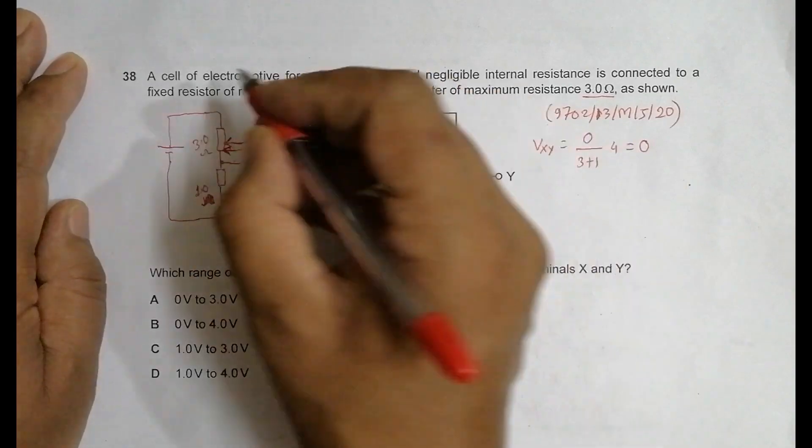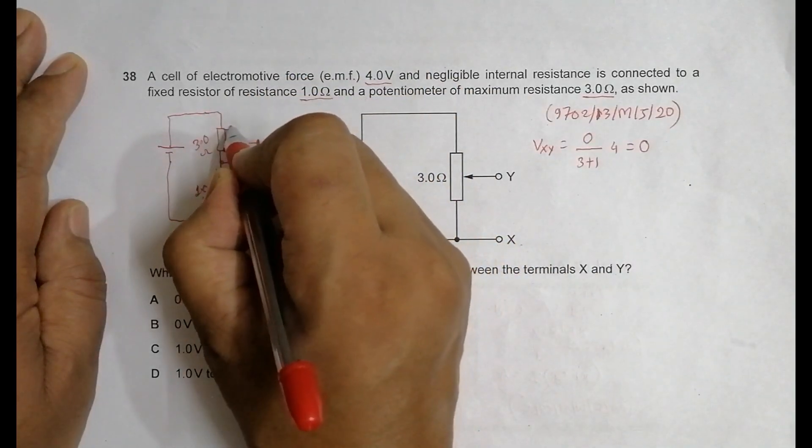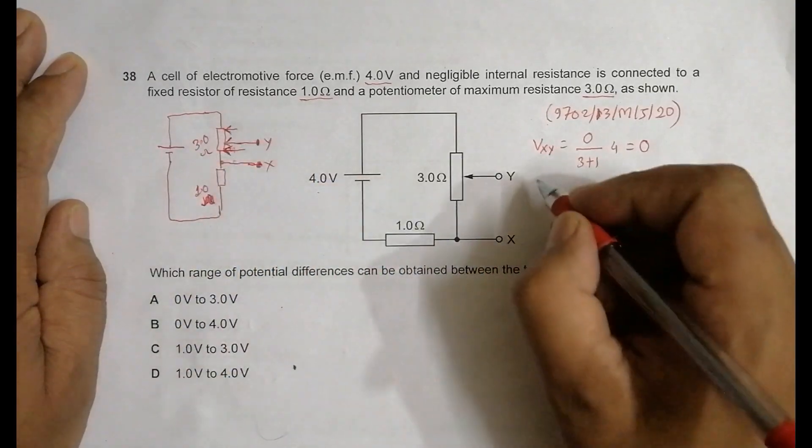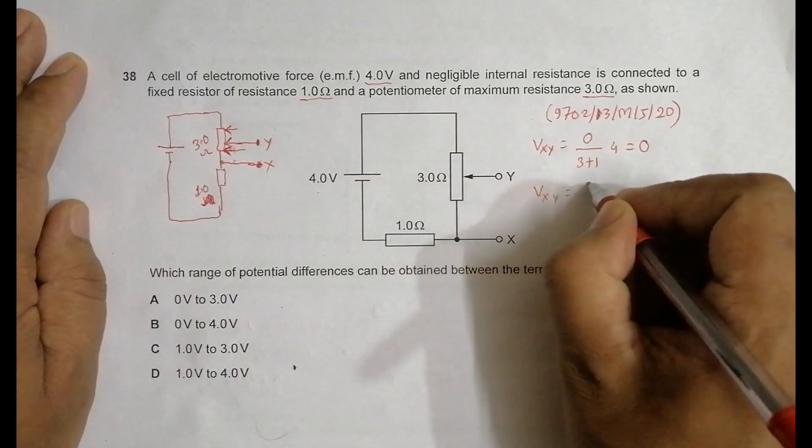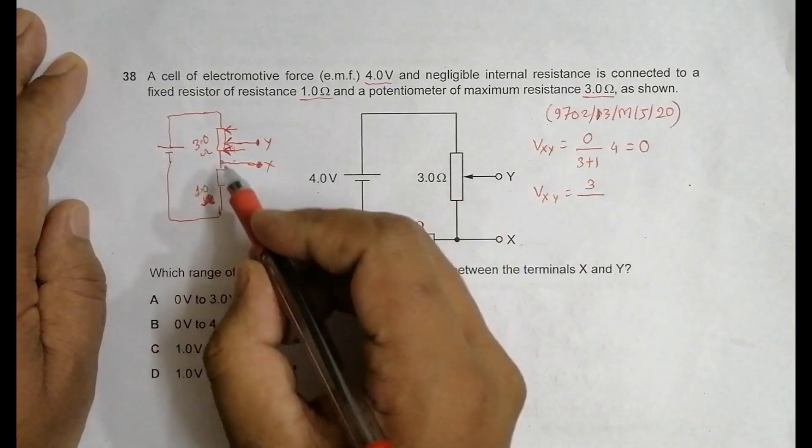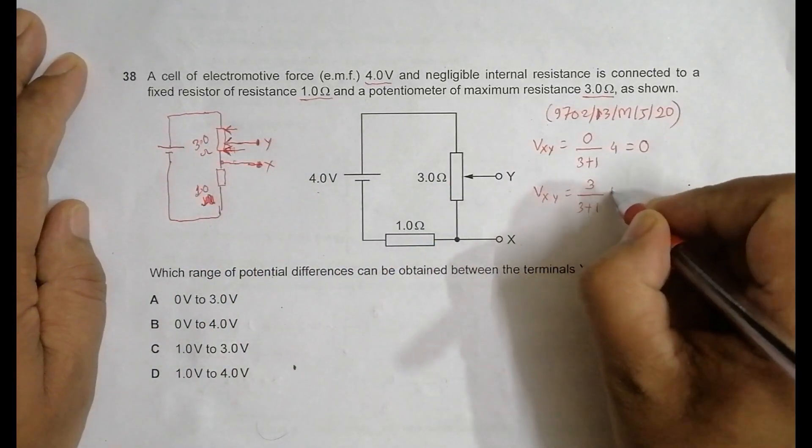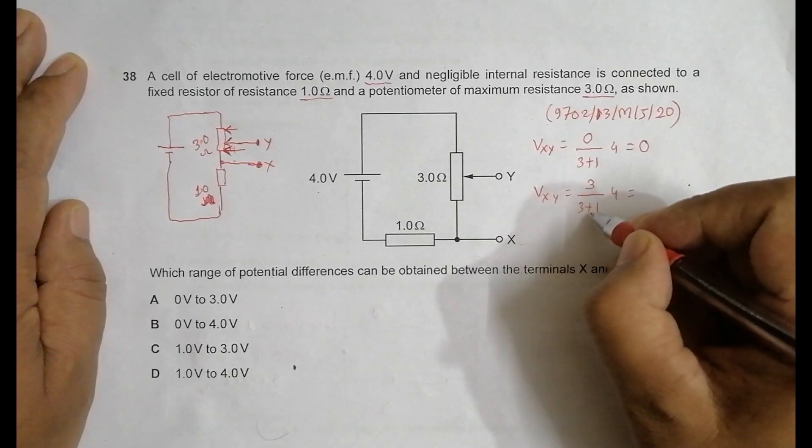Now when I place it here, the resistance RXY is equal to 3. So VXY now will be equal to 3 divided by the total, which is 3 plus 1, which is 4, into 4. That equals 3 by 4 into 4, equal to 3 volts.